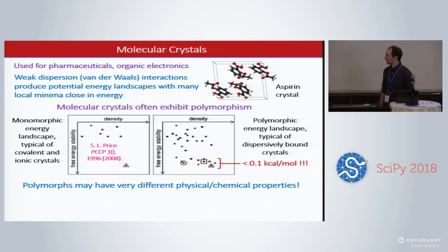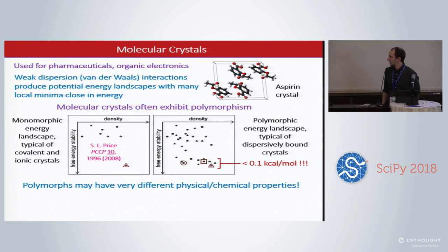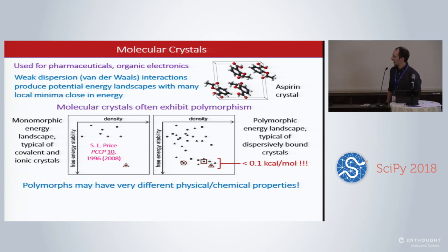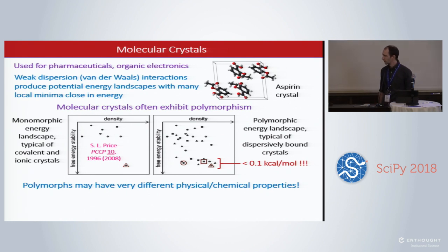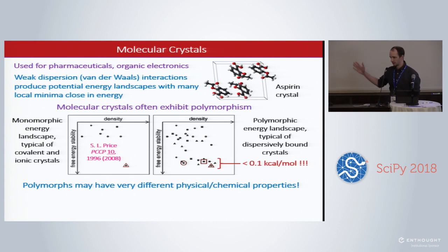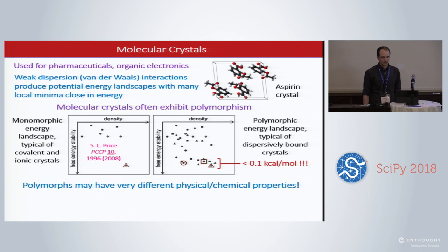One familiar example is an aspirin crystal. Here we see a plot of the free energy stability versus density of various crystallographic configurations. The points and the red shapes indicate putative crystal structures. The graph on the right is for a molecular crystal and the graph on the left is for an ionic crystal. We see that for the molecular crystal there are many structures that are very close in energy, because they're bound together with weak van der Waals interactions, as opposed to ionic crystals where there is really just one global minimum.